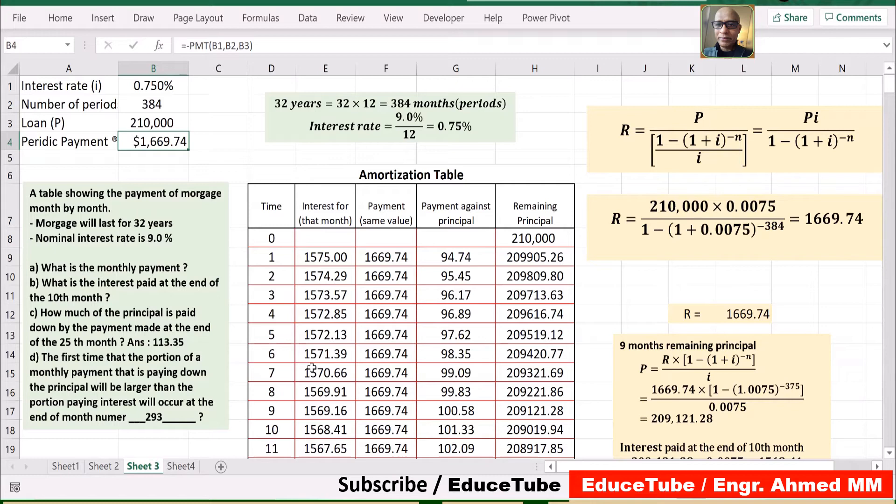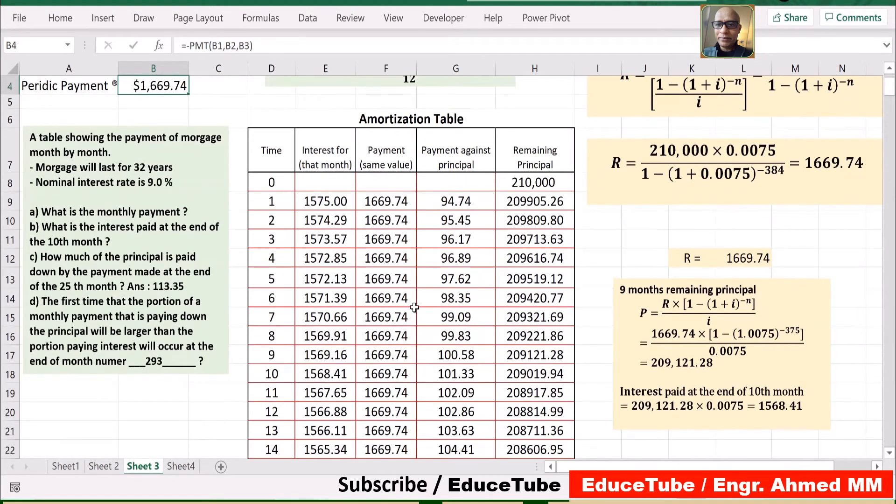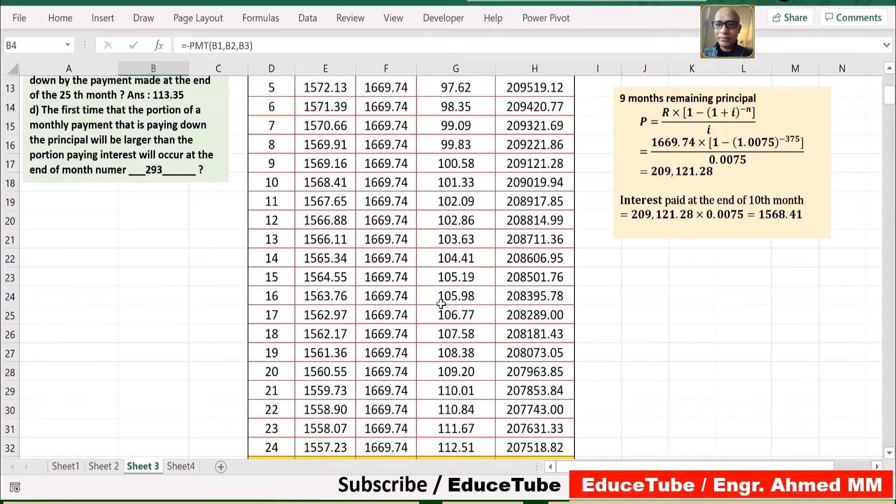And the amount applied to the principal increases. This is important: the interest is decreasing while the principal payment is increasing. After 384 payments, the loan is fully paid off. This is the normal procedure with 384 payments.